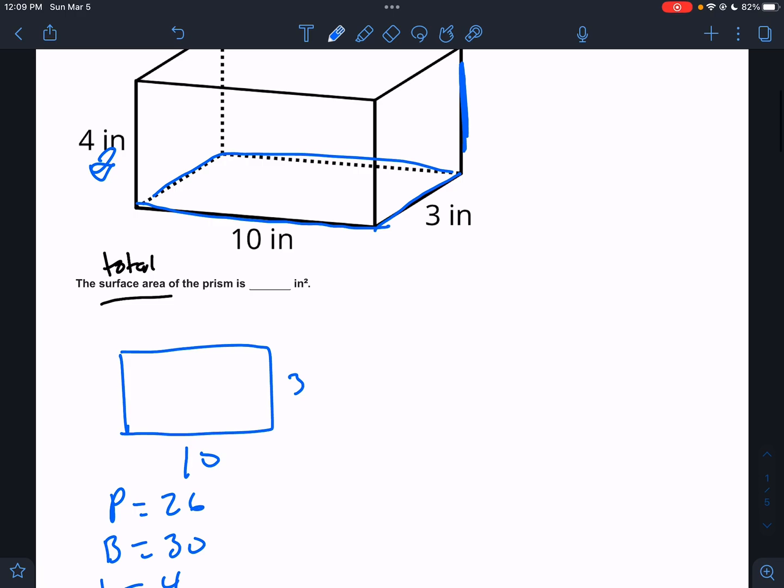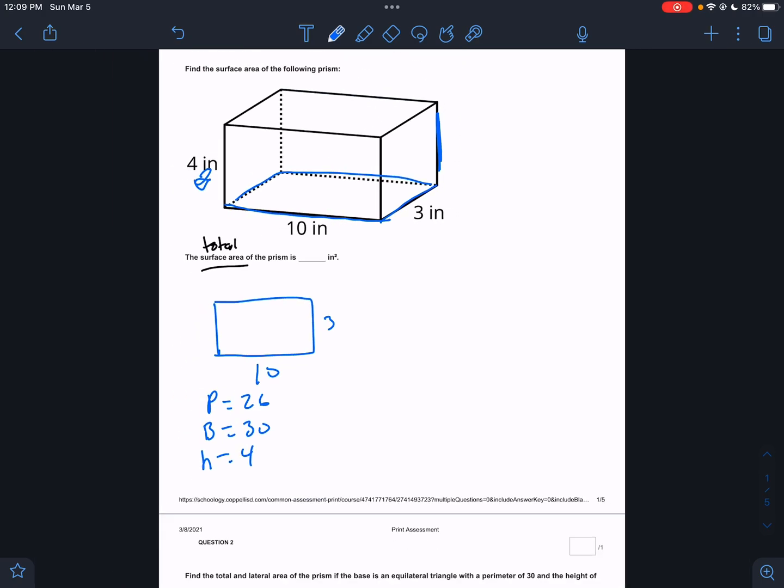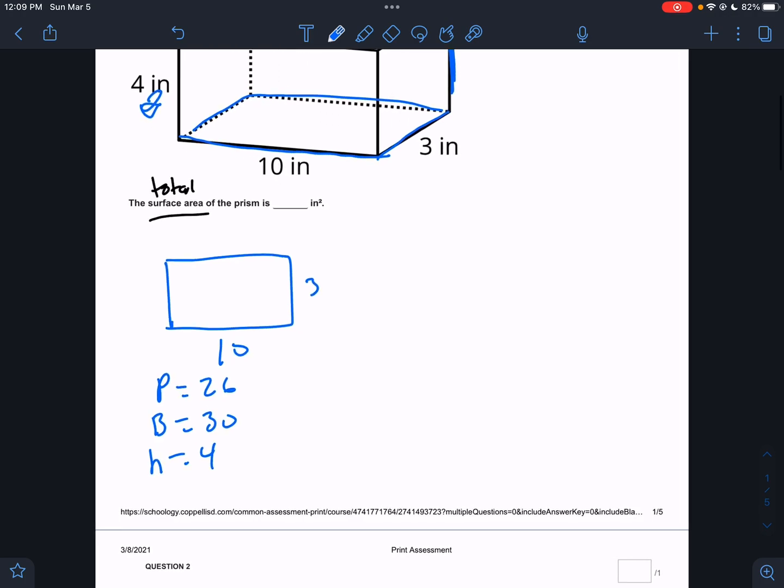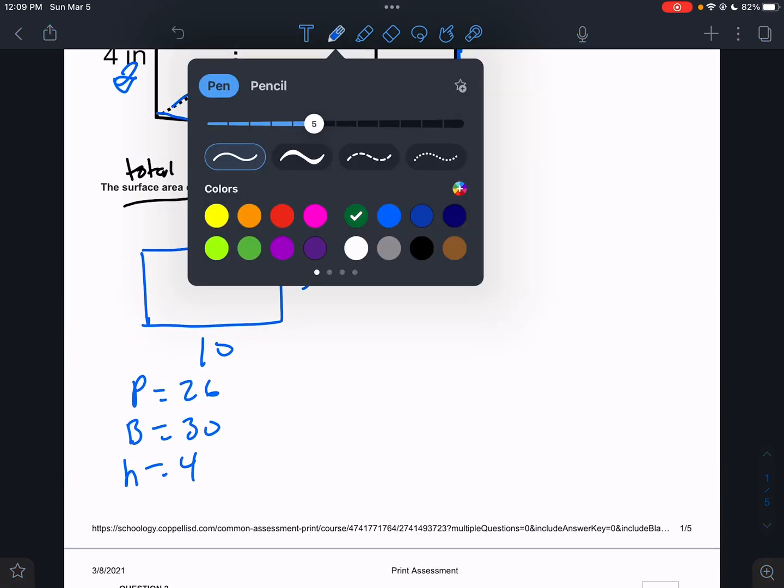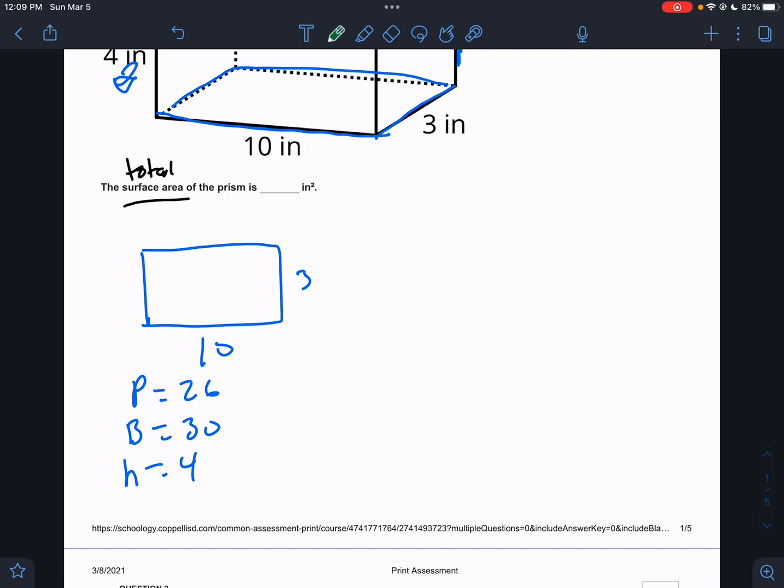Because right now, the lateral area are these vertical rectangles. And that will change. If we pick the front to be the base, that changes. So which base you pick does matter sometimes, but it won't matter for total surface area. I promise, you can try it every way you want. But we plug in. So surface area equals pH plus 2B for prisms.